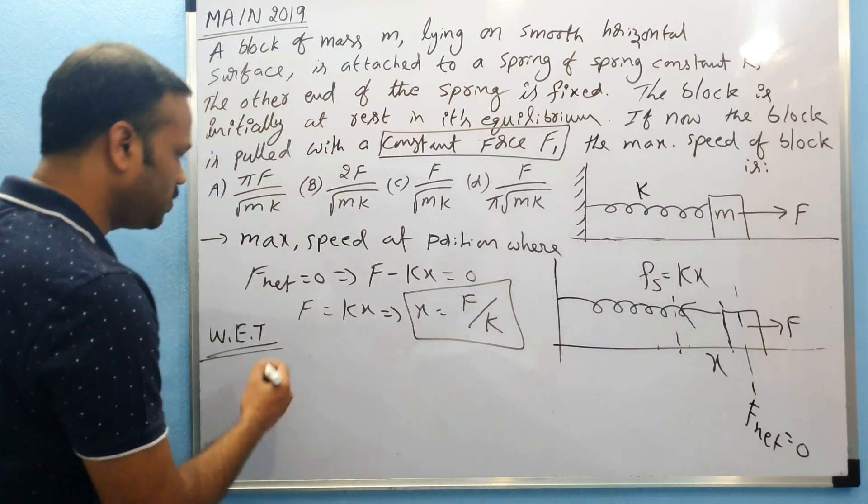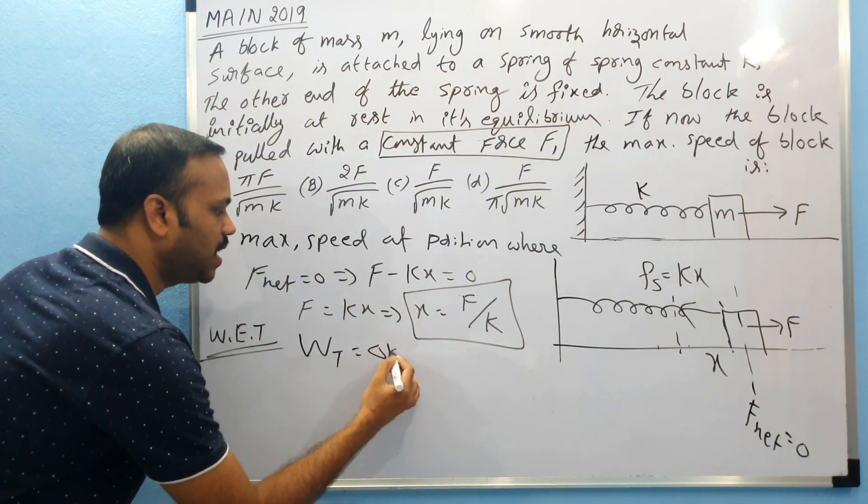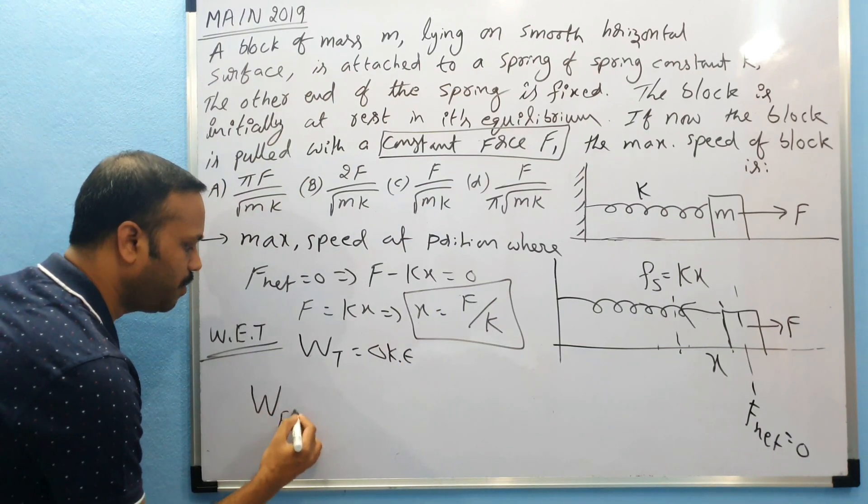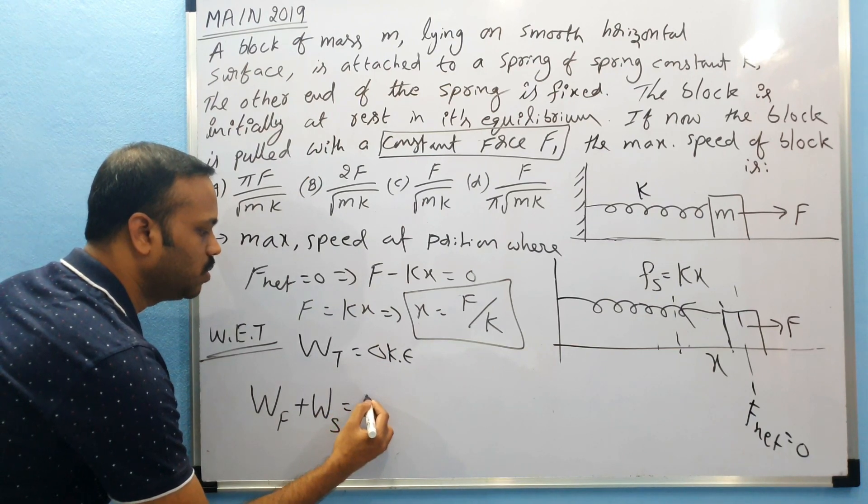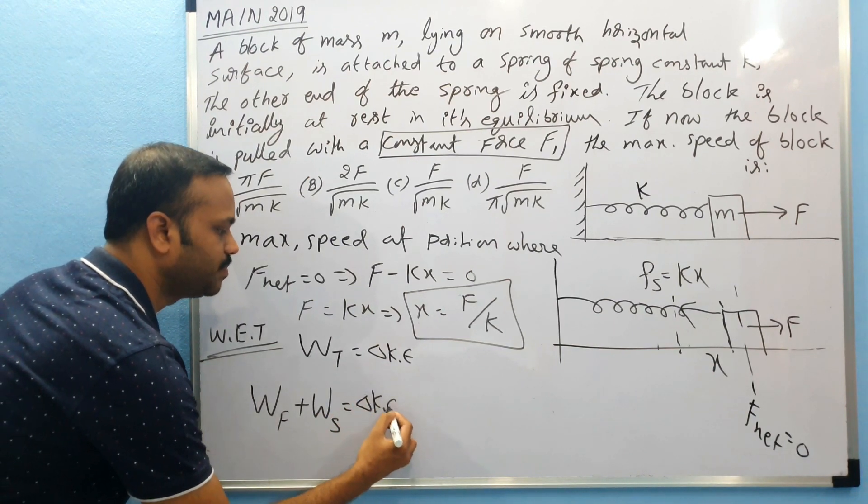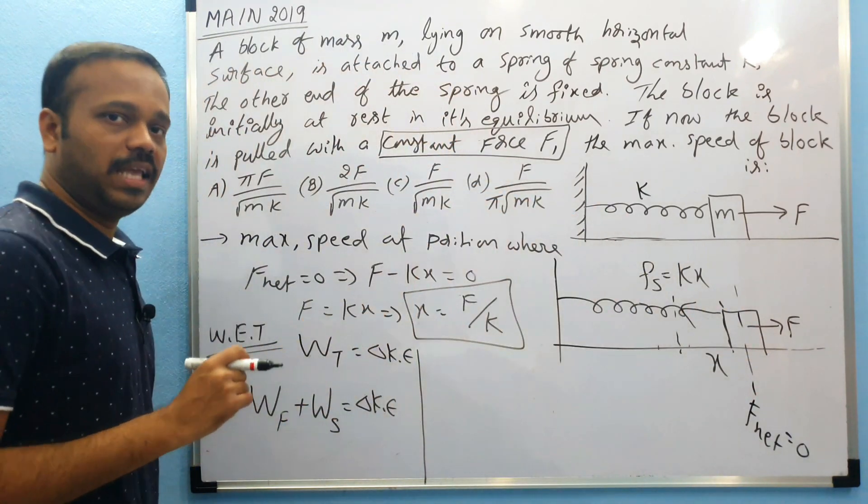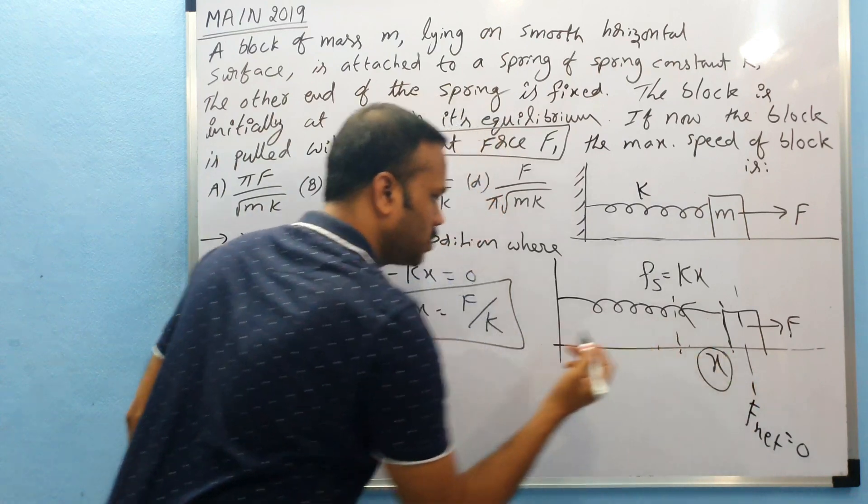And then we equate that to change in kinetic energy. So what is work-energy theorem telling? Total work is equal to change in kinetic energy, and the total work is work by F plus work by spring is equal to delta KE. So let's see what is the work done by F. This F moved the block by distance x, so the work done is force into displacement.